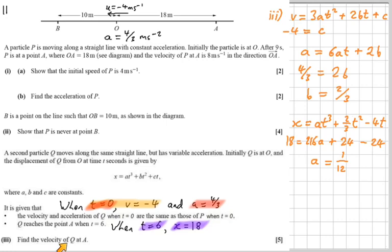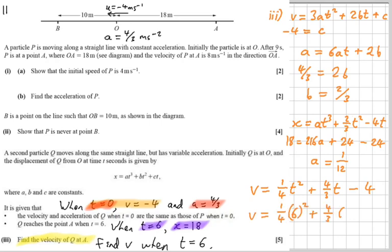Find the velocity of Q at A. So find the velocity of our particle at A. Well, what do we know about what at A means? At A means its displacement is 18. But notice we actually know its time there, don't we? Because it says here, Q is at point A when t is six. And that's more useful for us. So really, this request here to find the velocity of Q at A means find v when t is six. So let's rewrite our v again, but this time with our a, b, and c substituted in. And then simply substitute t equals six leads to our final answer of v is 13 meters per second.